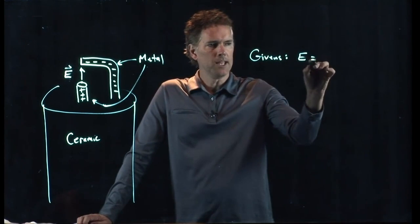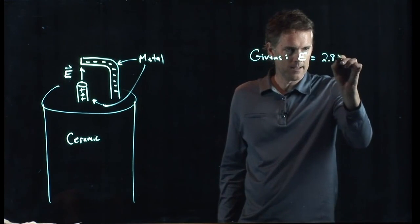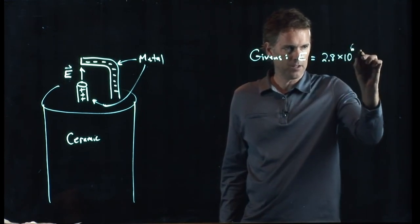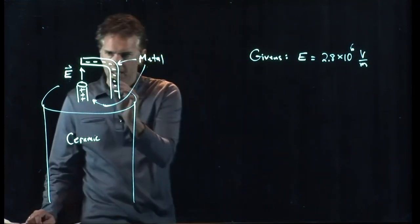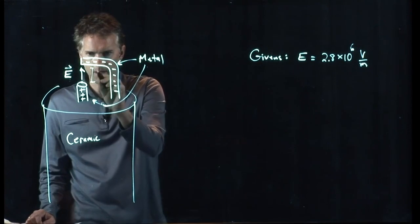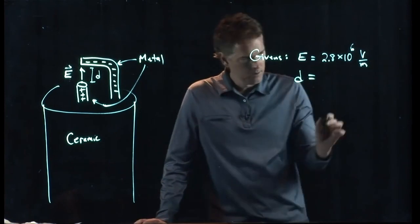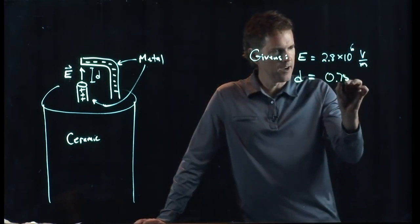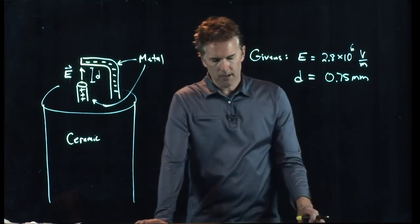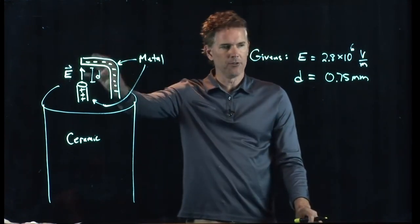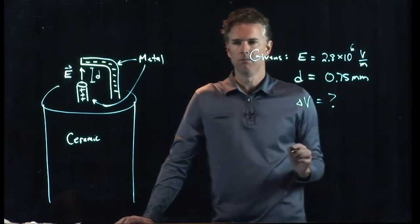Let's say that the electric field E has a strength of 2.8 times 10 to the 6 volts per meter. And let's say that the gap distance here, D, is 0.75 millimeters.